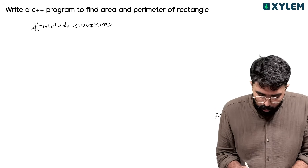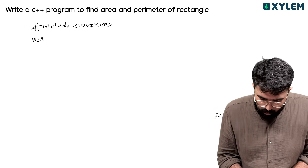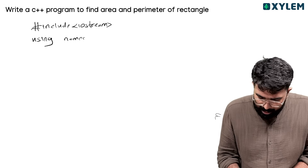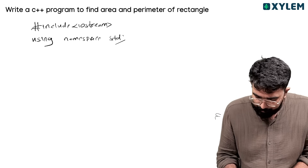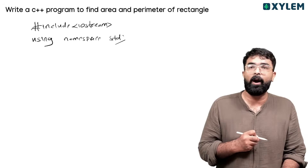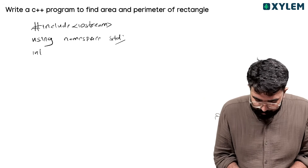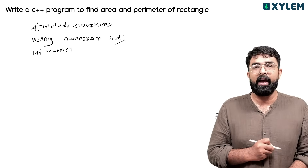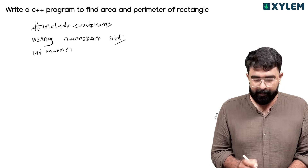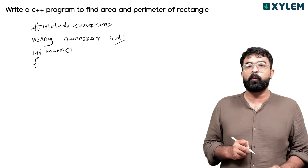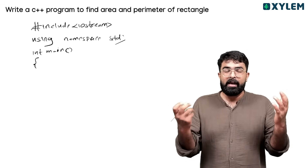Using namespace std semicolon, then int main. Okay, next the library is open. Okay, equation.